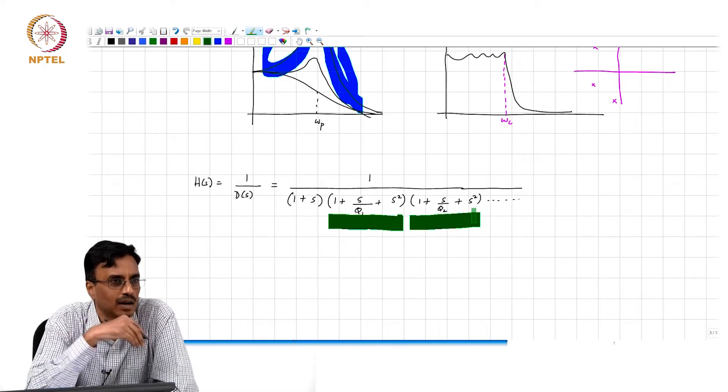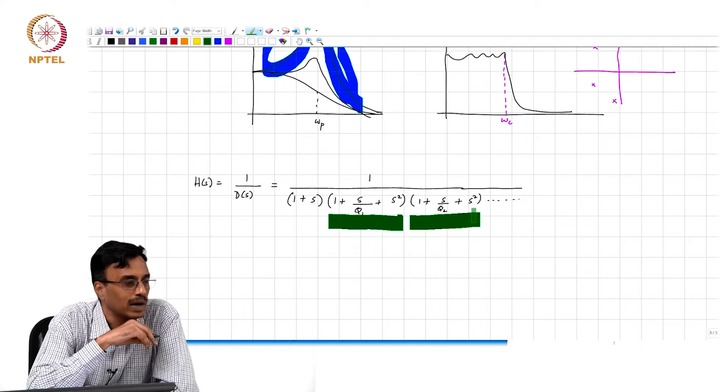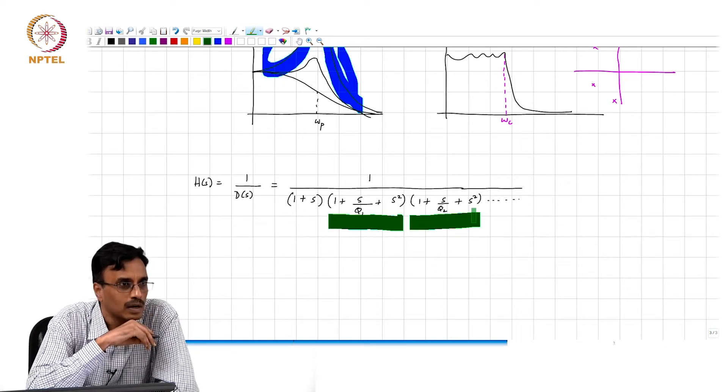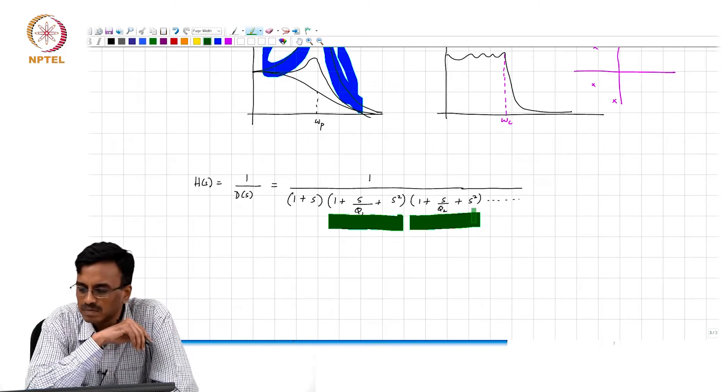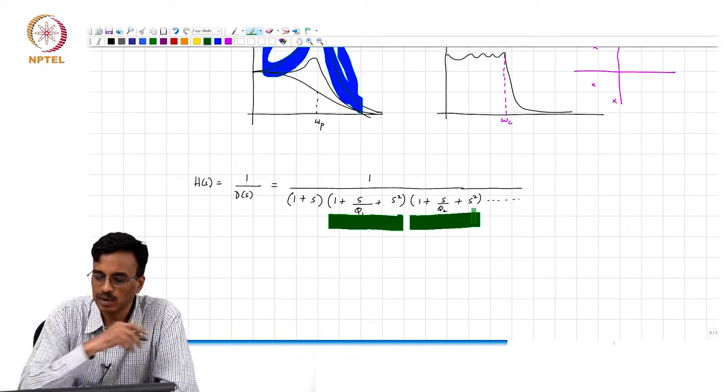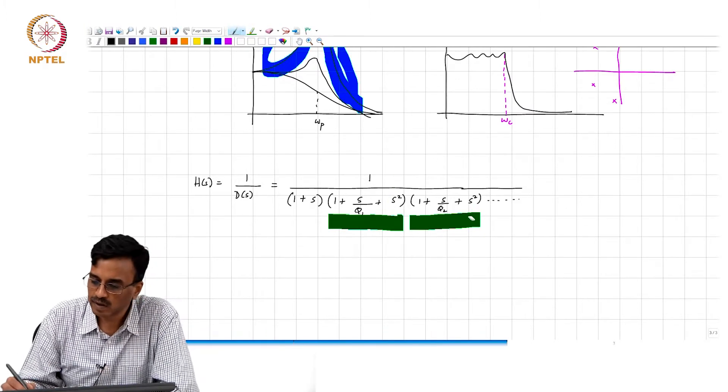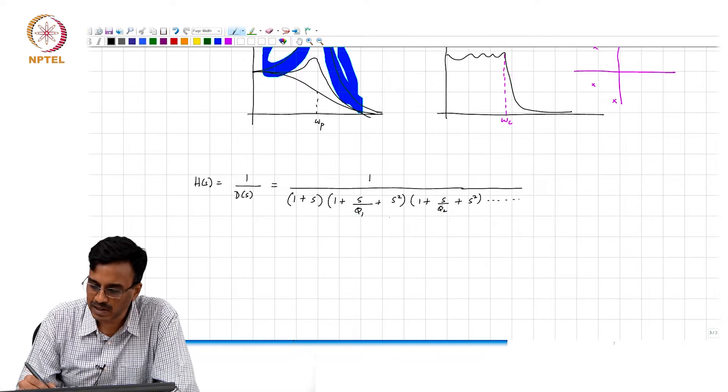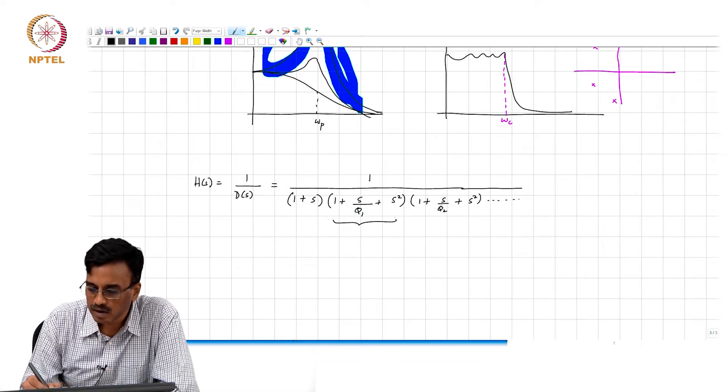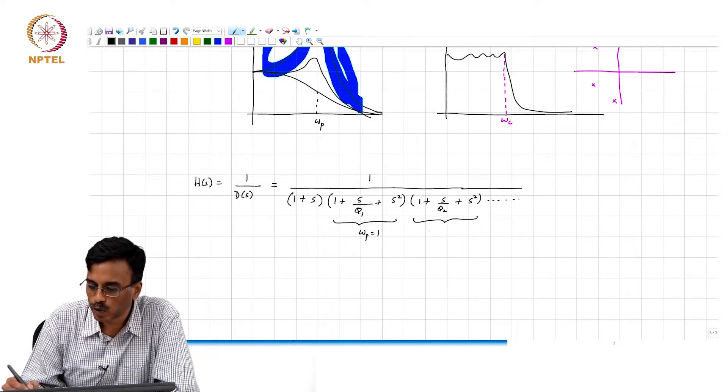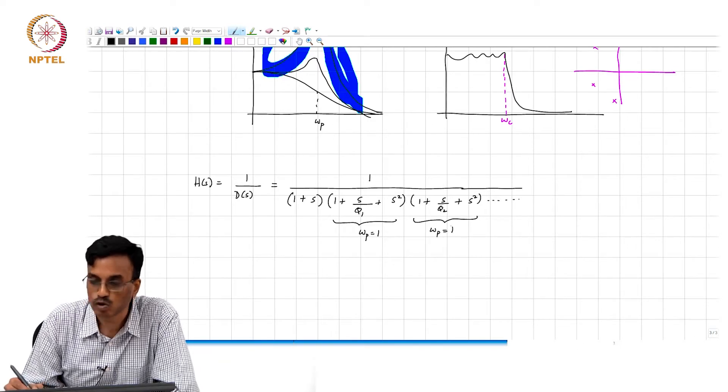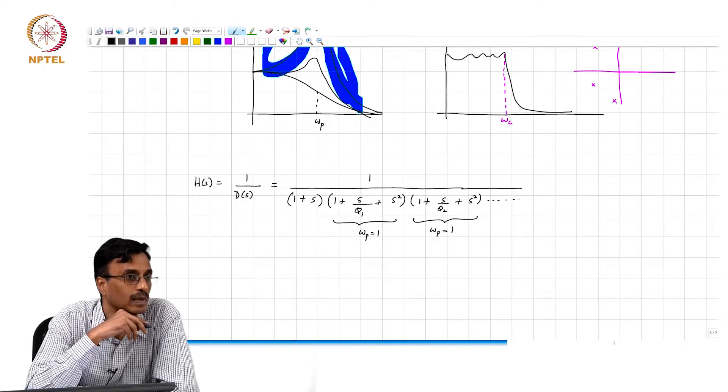Why does it make sense that all the omega_p's are 1, or does it make sense? That is ok, but what I am asking is, is it a coincidence that the omega_p of this is 1 and likewise omega_p of this section is also 1? Very good.